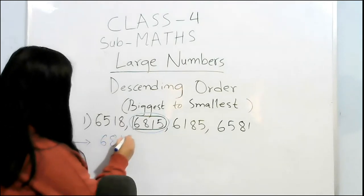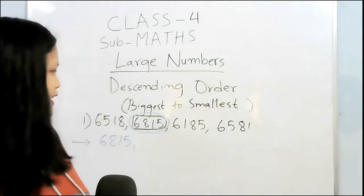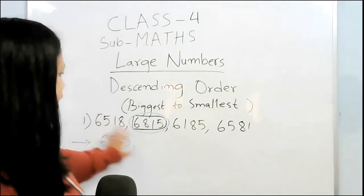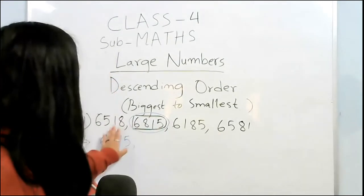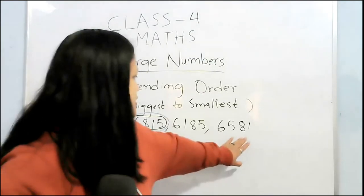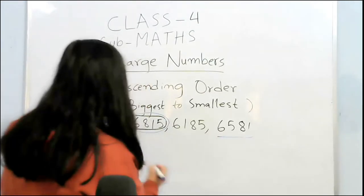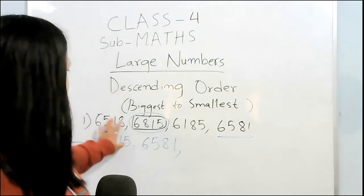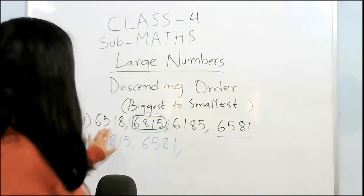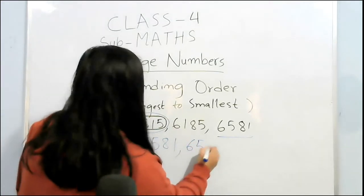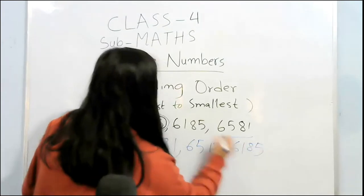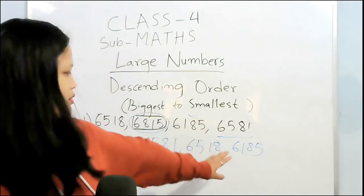6. Next one. All these 3, you have to look again. Here is 6, 5, here also 6, 5. Here is 1, and here is 8, so this one is bigger. And these 2, this one is bigger. This is the smallest, so it should come to the last.